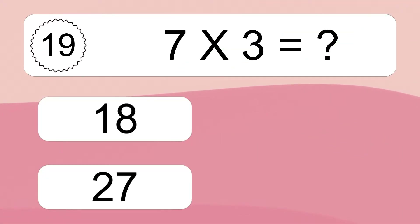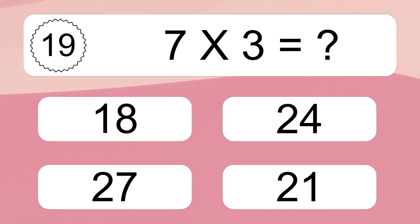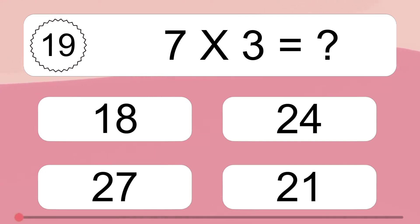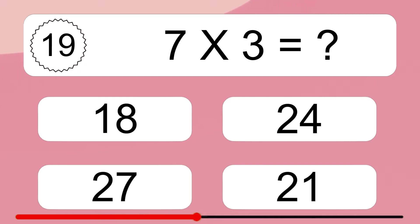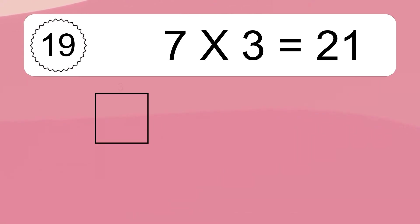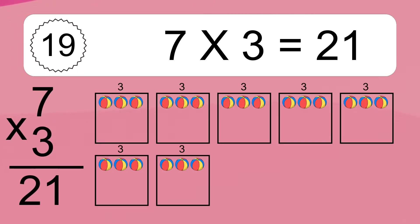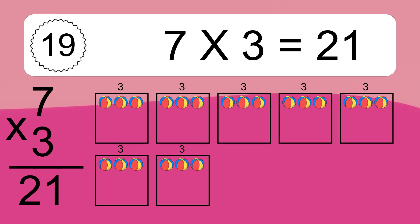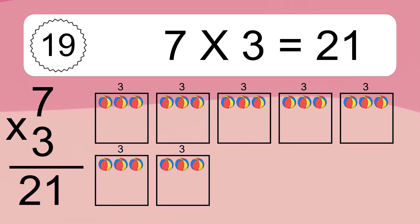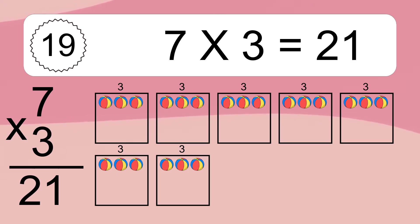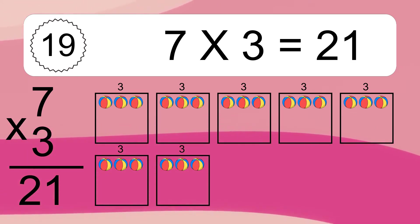7 times 3 equals what? 7 times 3 equals 21. We have 7 boxes and each box has 3 colorful balls inside. If you count all the balls in all the boxes together, you will have 7 times 3 balls. This equals 21 balls.